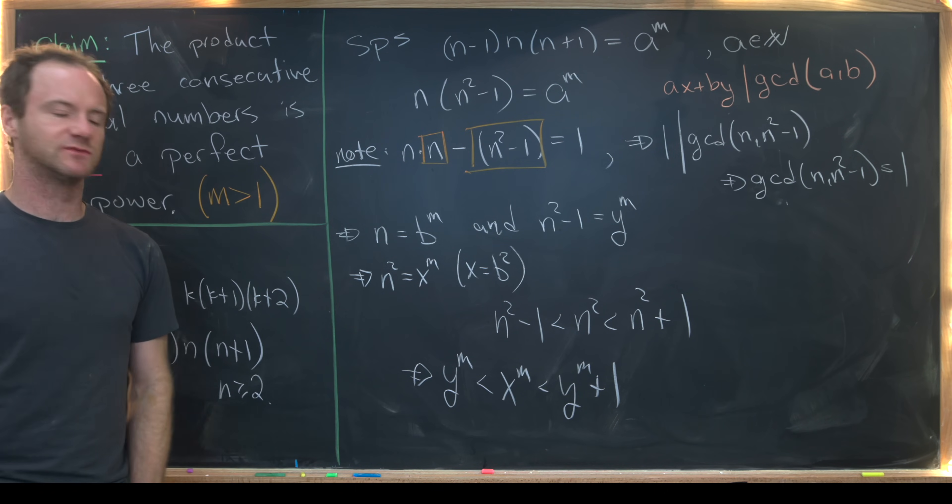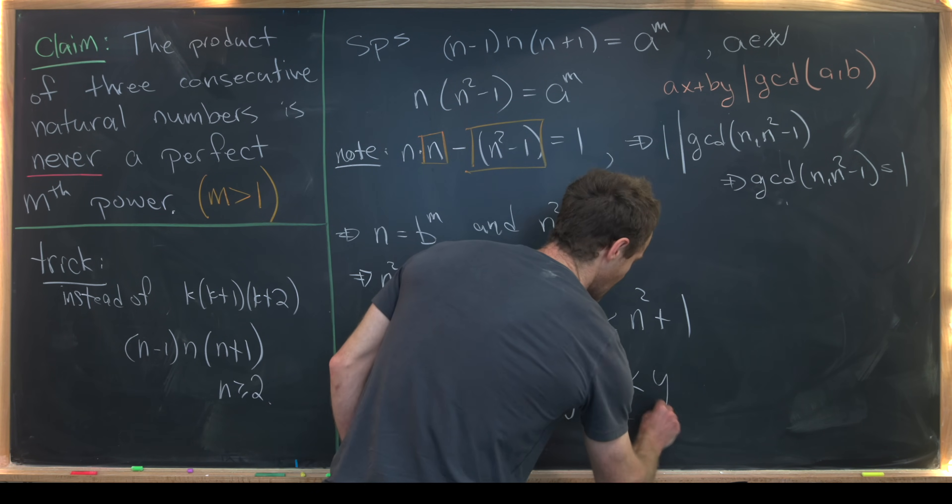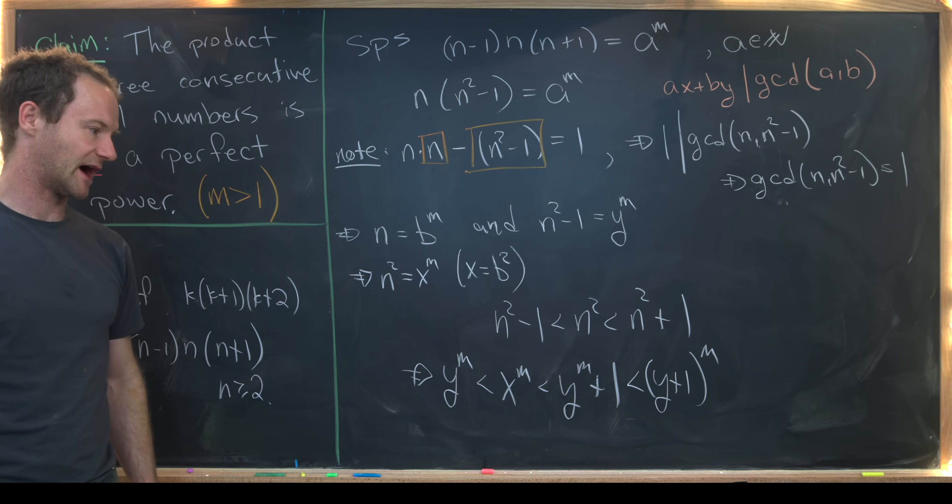Now that doesn't seem super helpful, but we can take this y to the m plus 1, and notice that that is less than y plus 1 to the m. That's pretty obvious just by the binomial theorem multiplying that out.